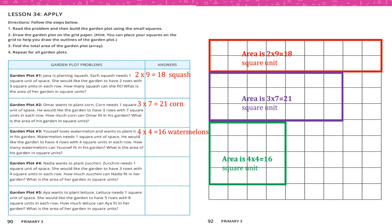Number 4: Nadia wants to plant zucchini. Zucchini needs 1 square unit. She wants 3 rows with 4 square units. So 3 times 4 equals 12 zucchini. We draw 3 rows with 4 squares each — total area is 12 square units.